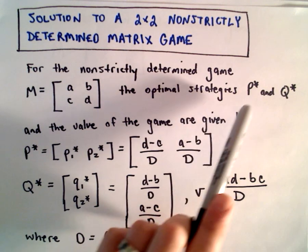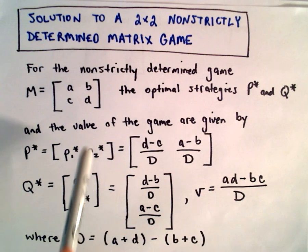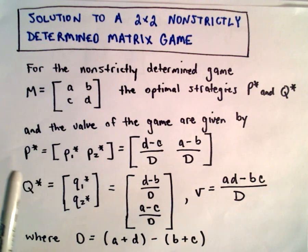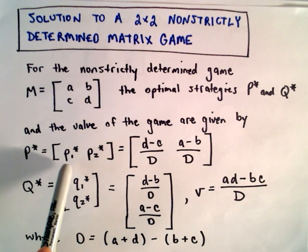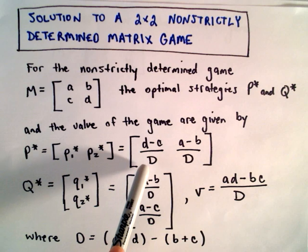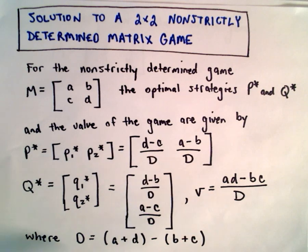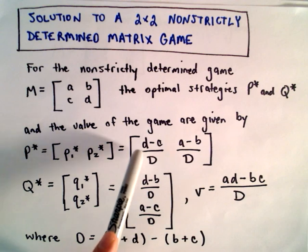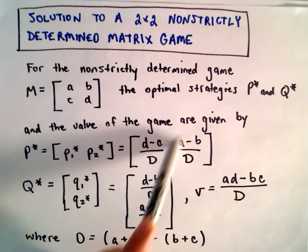It says the optimal strategies P star and Q star and the value of the game are given by the following formulas. To get the probabilities P1 star and P2 star, we take the entries D minus C over capital D, and capital D is given at the bottom. So we take D minus C over capital D, and to get the second entry, we take A minus B over capital D.